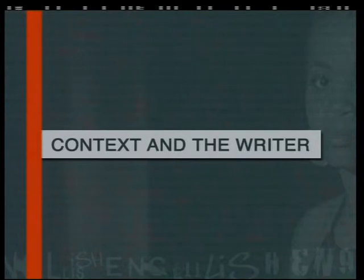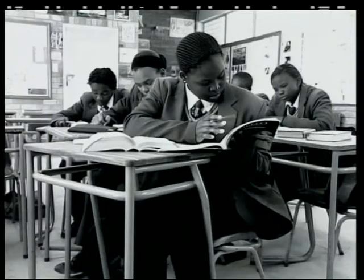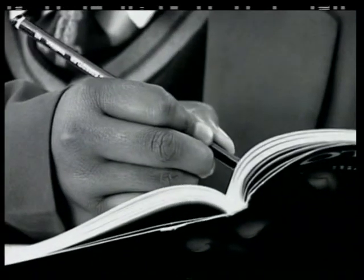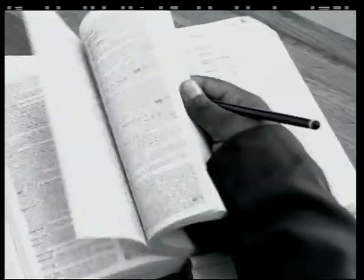Lesson 2: Context and the Writer. Lesson 2 looks at the role that context and the writer play in creating a novel. In this lesson, learners are encouraged to think about how they go about choosing a novel to read. They learn about context and how you can develop an understanding of context and the writer by asking yourself a series of questions when choosing a book. In this lesson, we meet Jenny Robson, the author of Because Bula Means Rain.